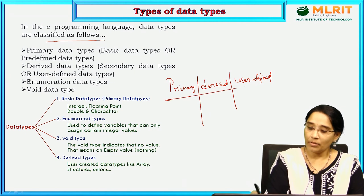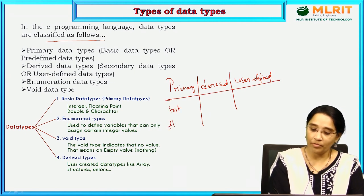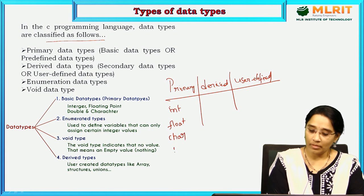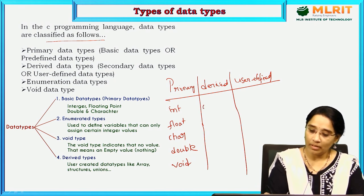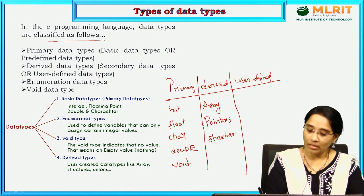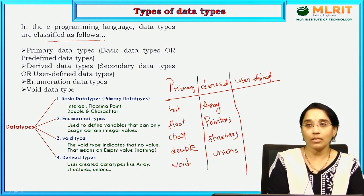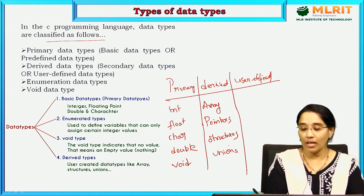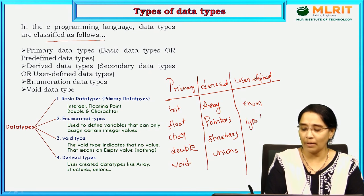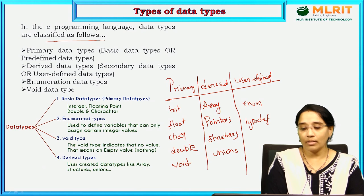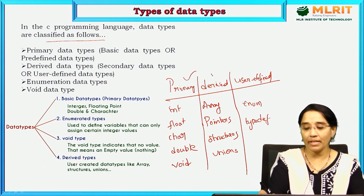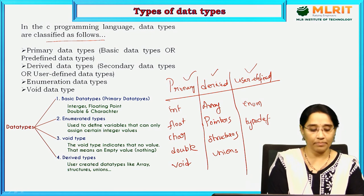In primary data types we have int, float, char, double, and void. Derived data types are arrays, pointers, structures, and unions. User-defined data types are enum and typedef. These data types are categorized into 3 types: primary, derived, and user-defined.